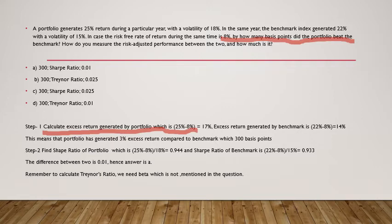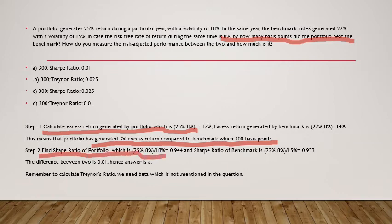Now calculate the Sharpe ratio of the portfolio: (25% − 8%) / 18% = 0.944. The Sharpe ratio of the benchmark is (22% − 8%) / 15% = 0.933. The formula is: fund or benchmark return minus risk-free return, divided by standard deviation (sigma). The difference between 0.944 and 0.933 is 0.011, which is the answer.